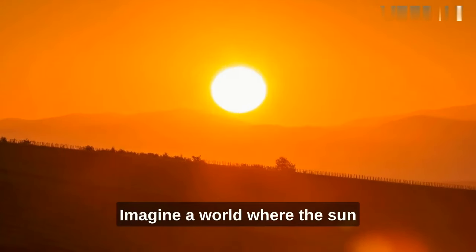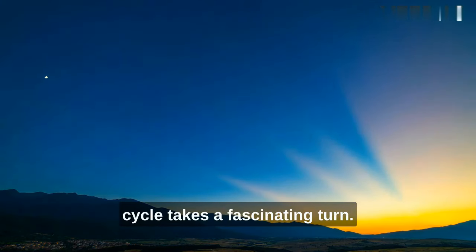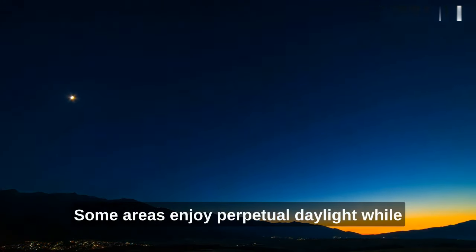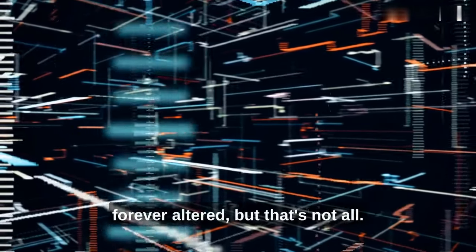Imagine a world where the sun rises and sets in unexpected places. On donut Earth, the day-night cycle takes a fascinating turn. Some areas enjoy perpetual daylight, while others are plunged into constant darkness. Our sense of time would be forever altered.